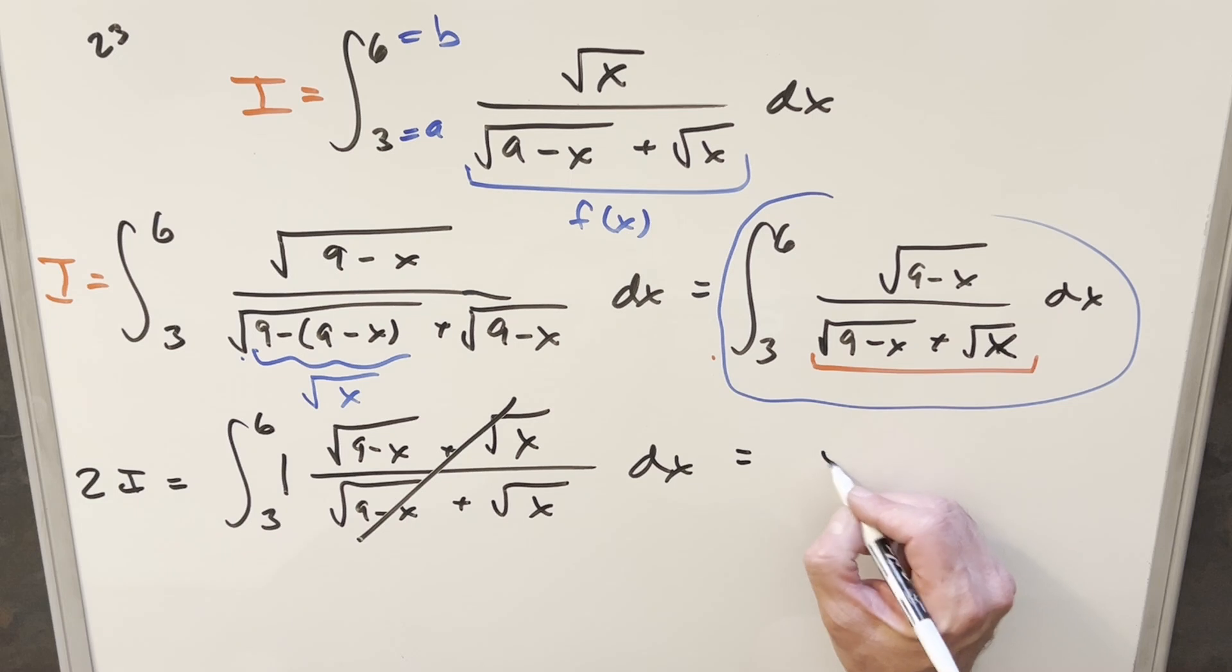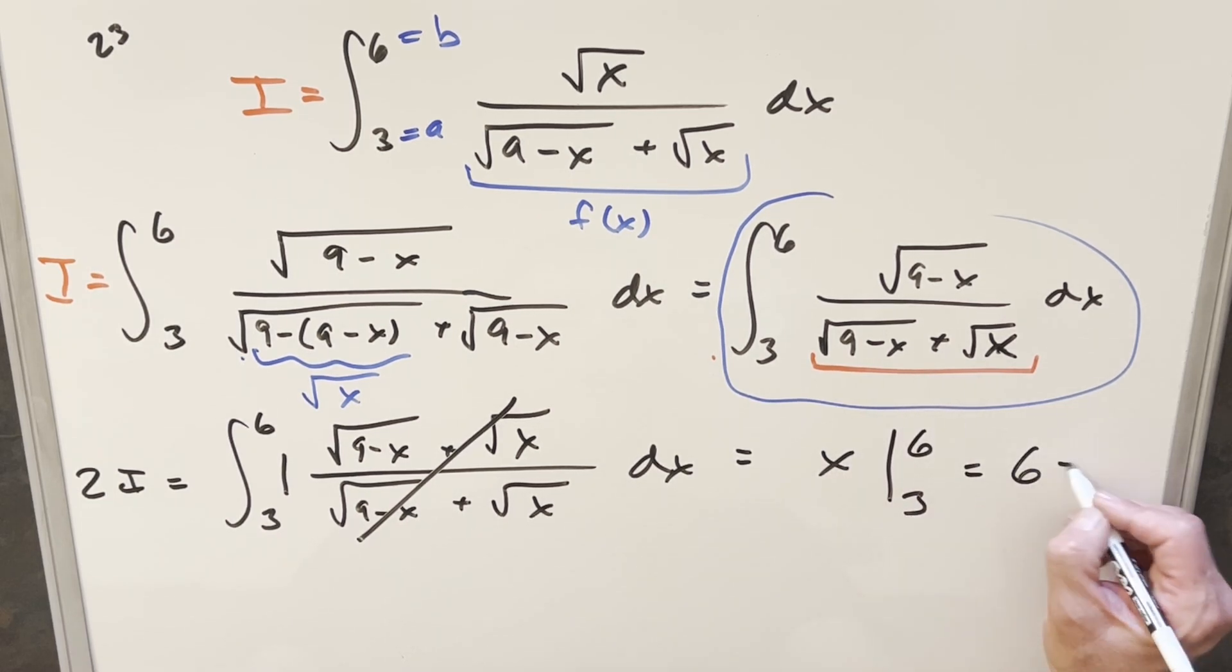Integrating that, integral of one, we're just evaluating x from three to six. Plug it in, we get six minus three. That's going to be equal to three.